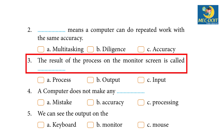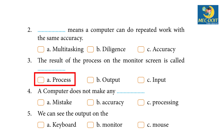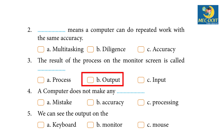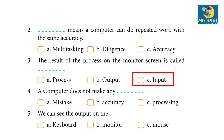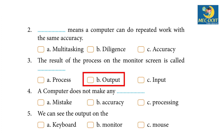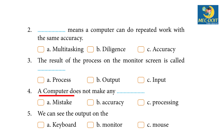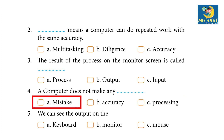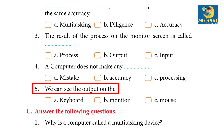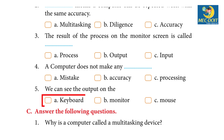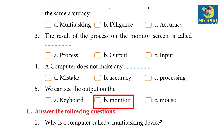Three: The result of the process on the monitor screen is called dash. A) Process, B) Output, C) Input. Answer: B — Output. Four: A computer does not make any dash. A) Mistake, B) Accuracy, C) Processing. Answer: A — Mistake. Five: We can see the output on the — A) Keyboard, B) Monitor, C) Mouse. Answer: B — Monitor.